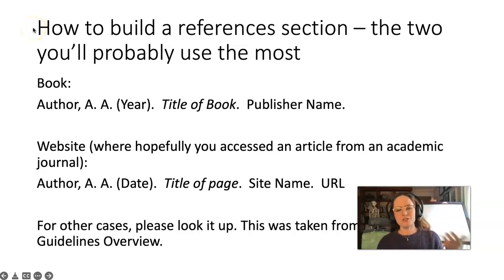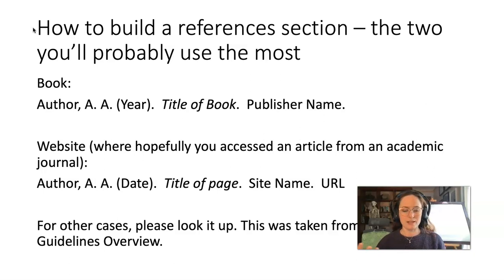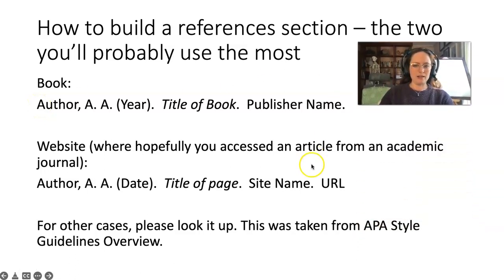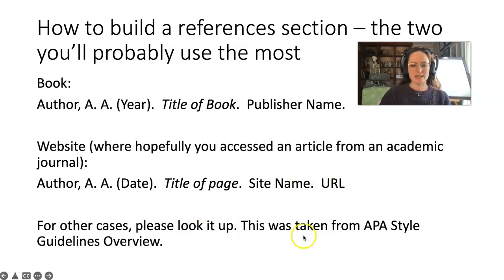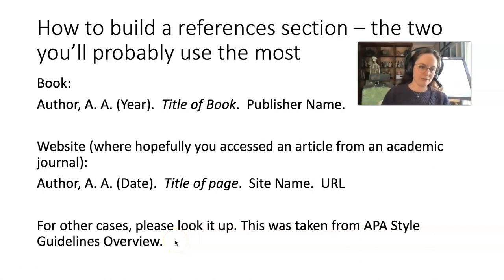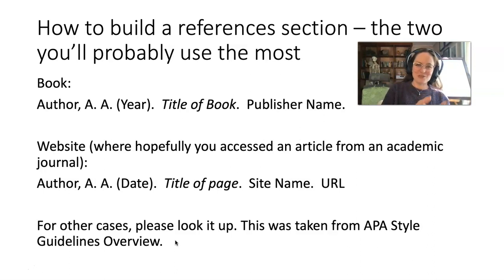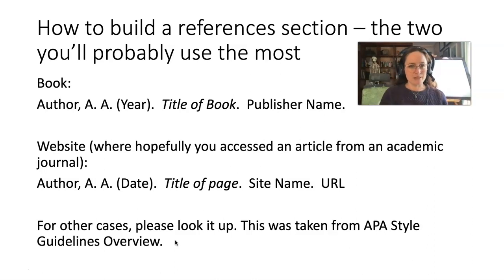So how do you build a references section? Here are the two formats you'll probably use most. A lot of students like to use their textbook — I usually say you can use your textbook and the rest have to be journal articles. This is slightly simplified: for a URL, it typically says the retrieval date and 'retrieved on [date] from this URL.' But this is taken directly from the APA style guide overview — that poster I showed at the beginning. If you follow it exactly and somebody takes points off, you can say 'here's my source.' Citing your sources proves yourself right.